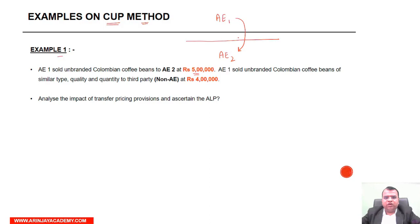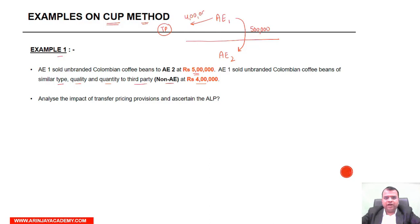AE-1 sold these Colombian coffees at rupees 5,00,000. AE-1 also sold unbranded Colombian coffee beans of similar type, quality and quantity to a third party who is a non-AE at rupees 4 lakh. So the same AE sold to a third party at rupees 4 lakh. Analyze the impact of transfer pricing provisions and ascertain the arm's length price.